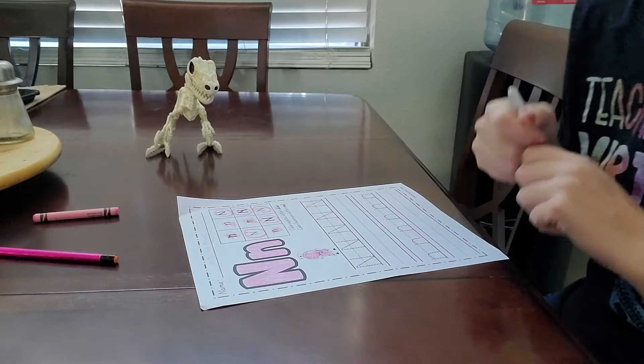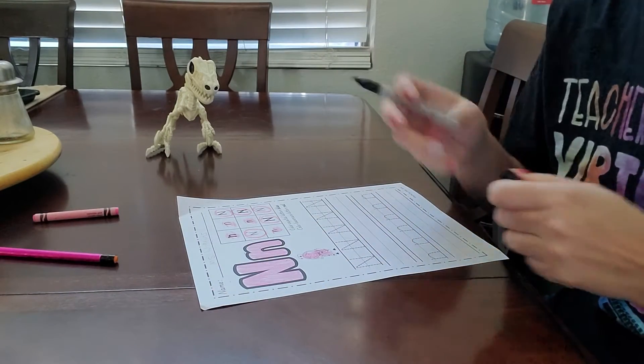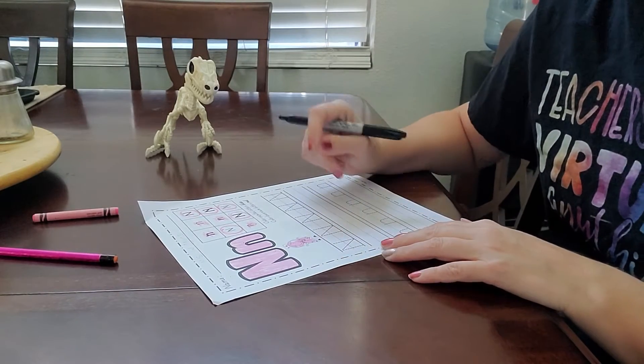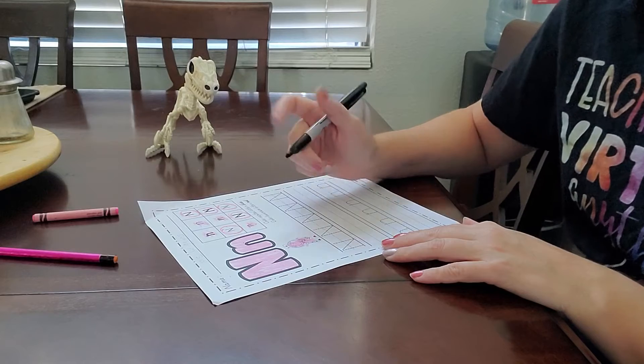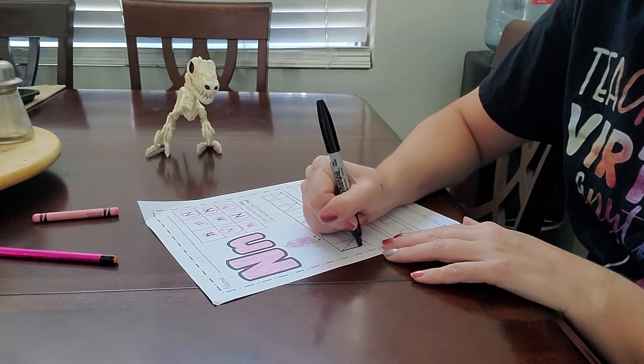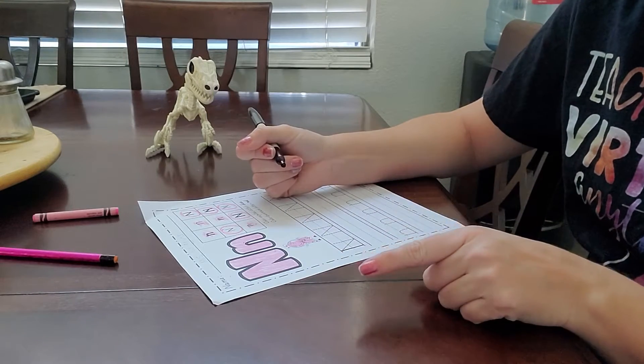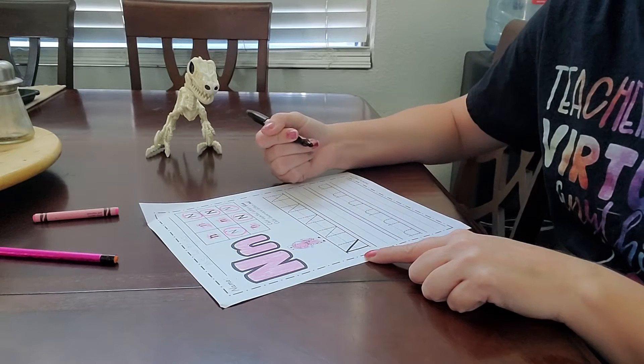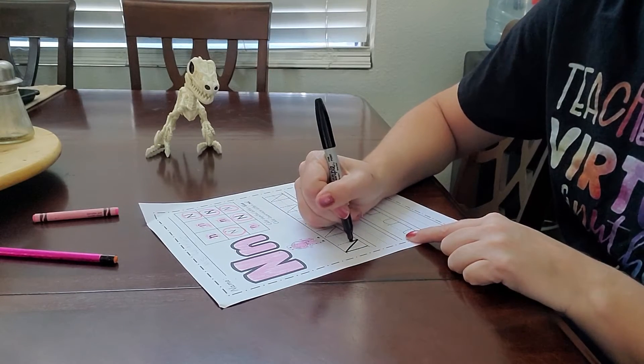Now we're going to take our pencil. I'll use my marker so you can see. And you're going to trace the uppercase Ns. So an uppercase N is a straight line from top to bottom. And then it's a diagonal line from the top. Diagonal line down. And then it's a straight line up.